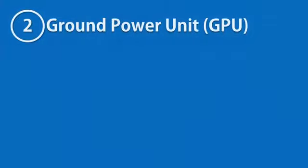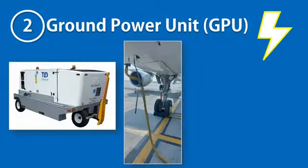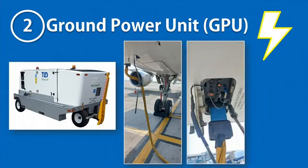An aircraft ground power unit is a ground support equipment that supplies electrical power to the aircraft on the ramp when the aircraft engines are off.